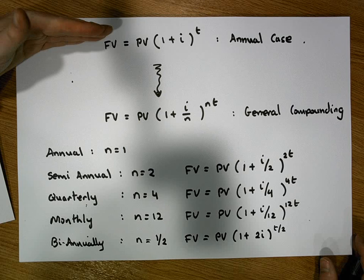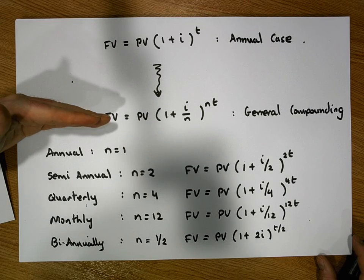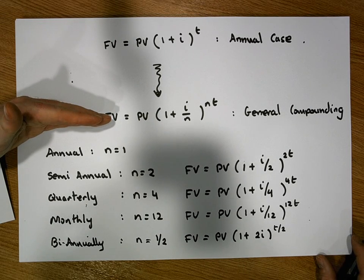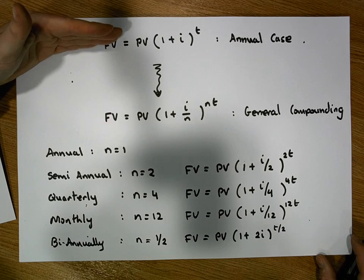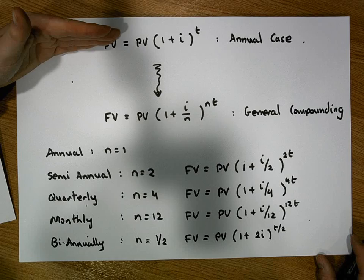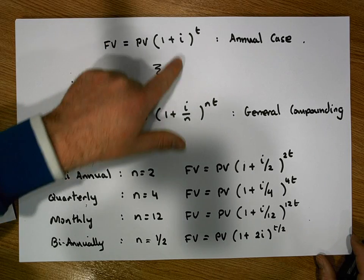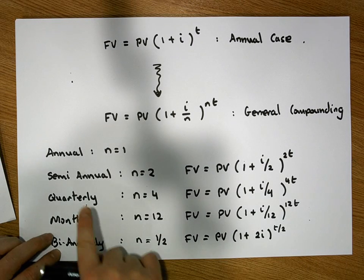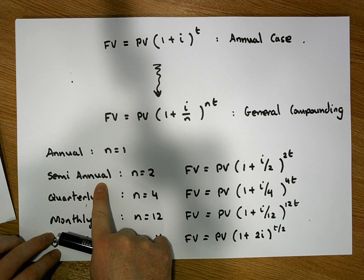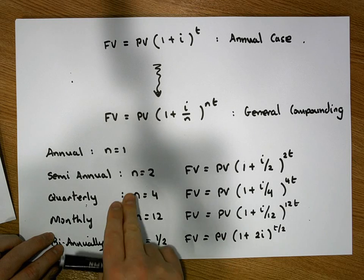I know we took a little bit of a jump from the annual case into the general compounding case. But let's just be reassured that this particular formula is a simple extension of this particular formula. But this time where we've got more compoundings happening over the number of years. Actually, if you think about it from a semi-annual perspective, there's two compoundings happening in a year.